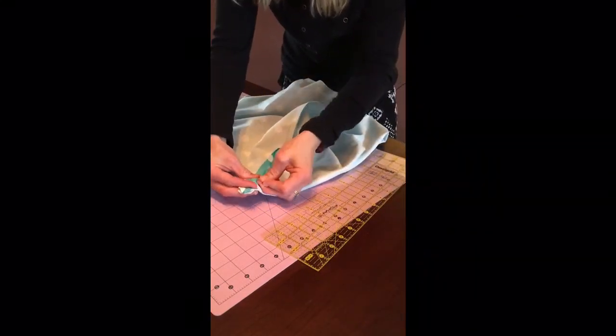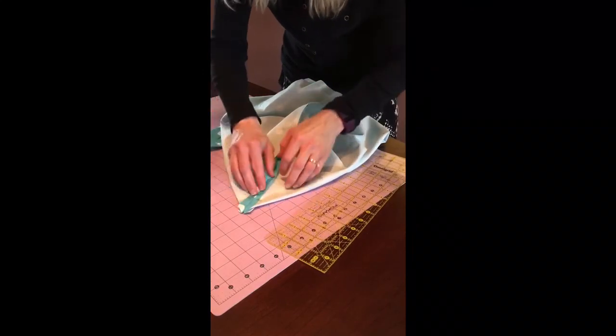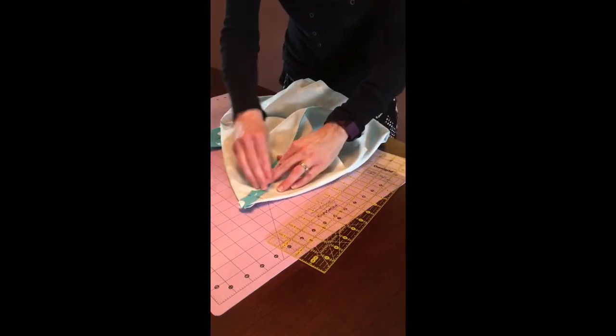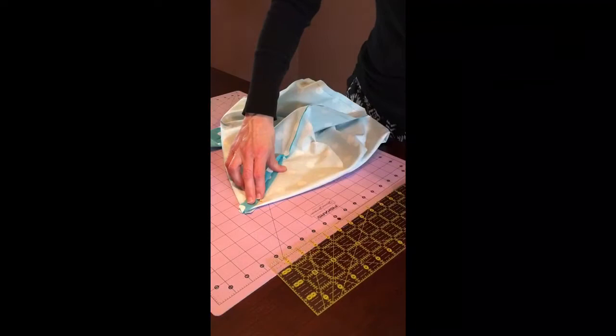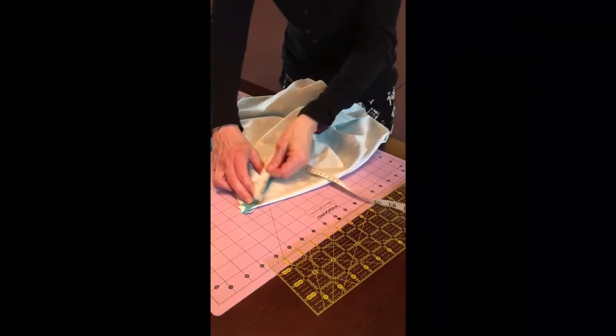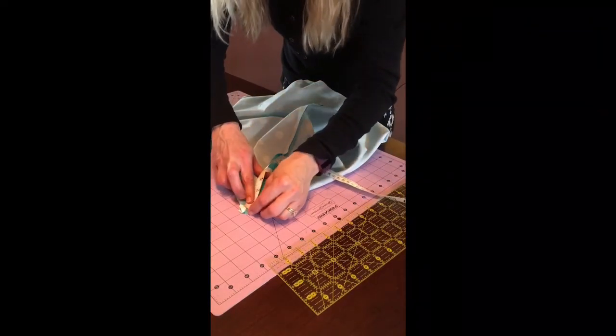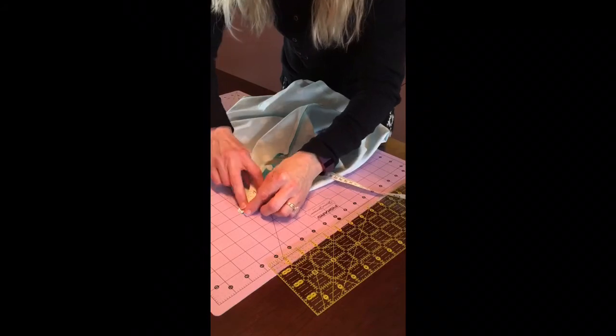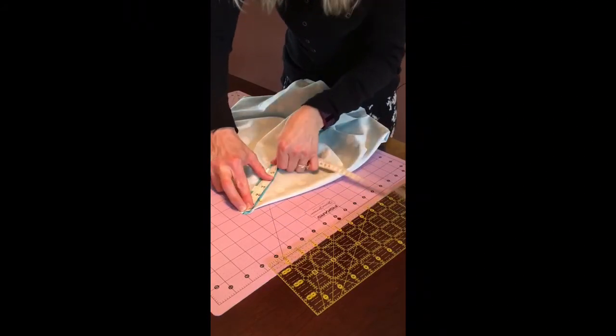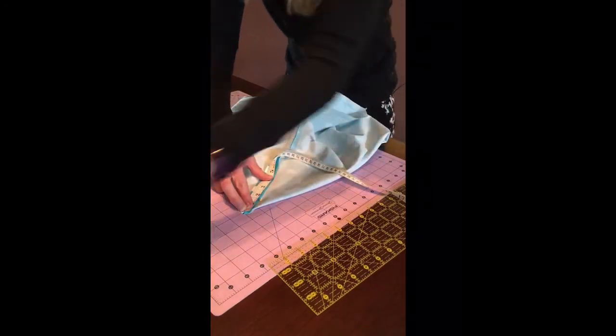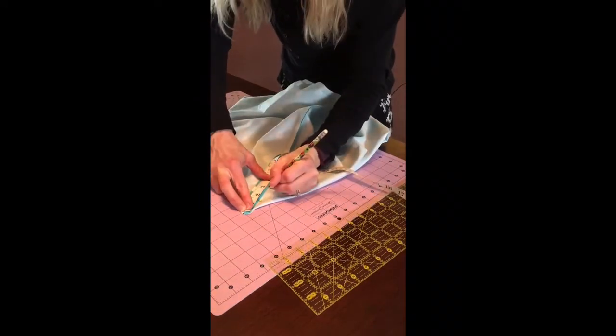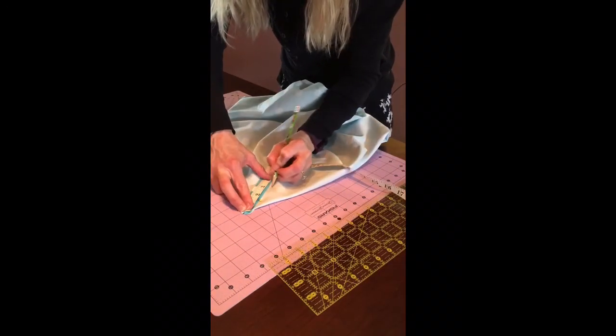Have your seams open. And then like I said, I'm going to go down three inches. You want to do it from where the seam starts. You don't want to catch your seam allowance in there. So we're going to mark three inches.